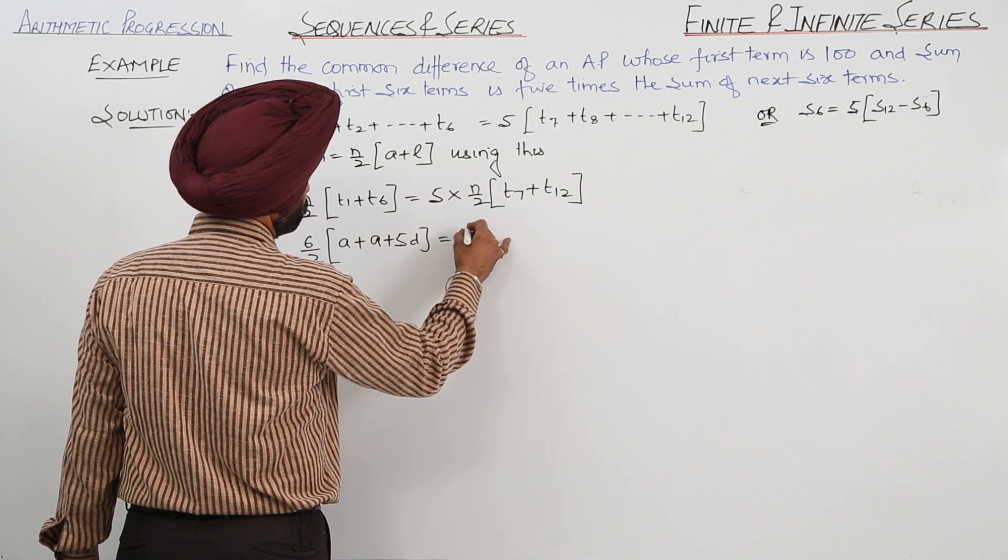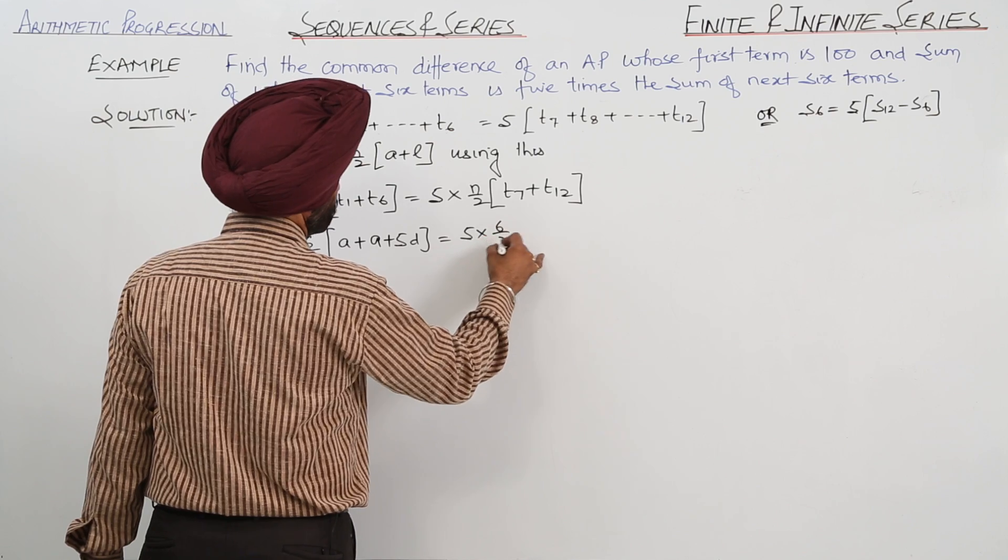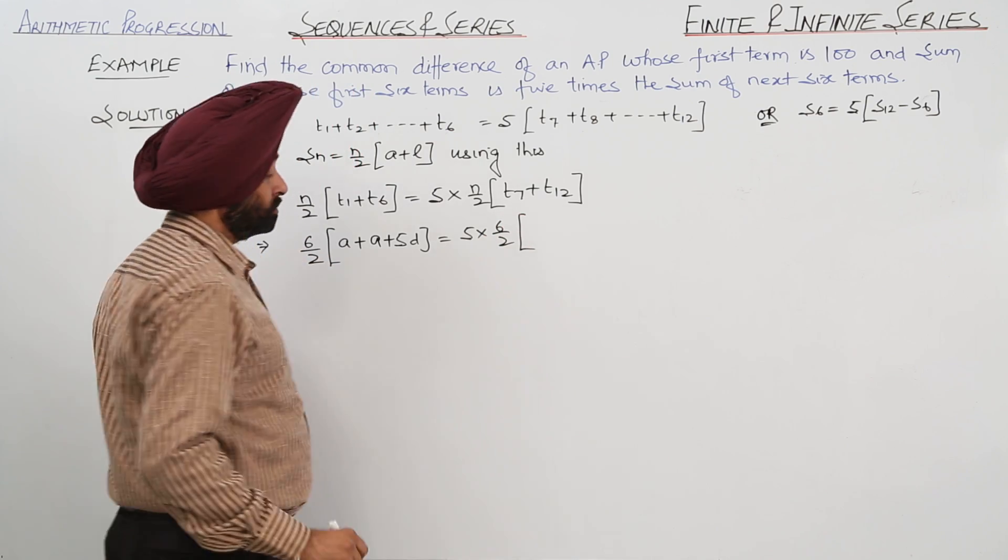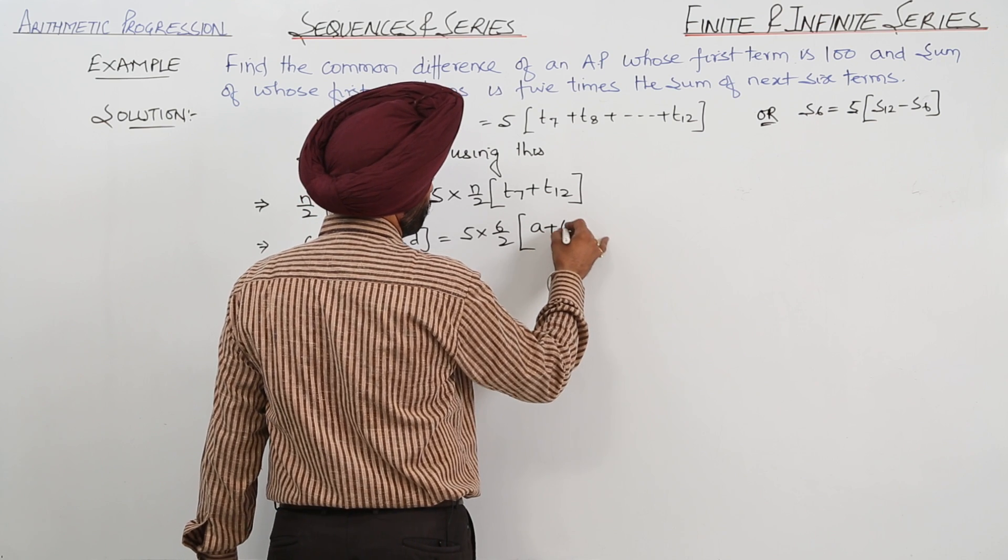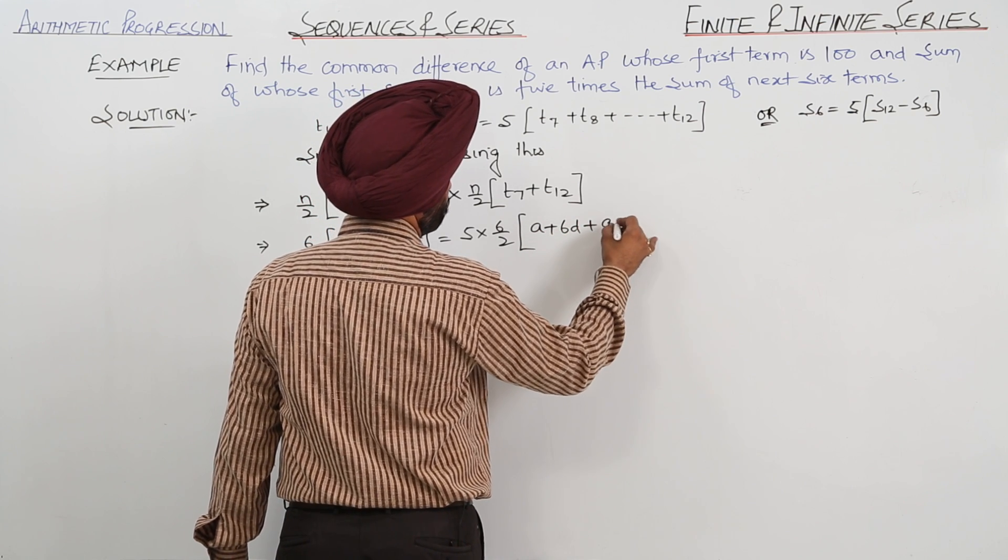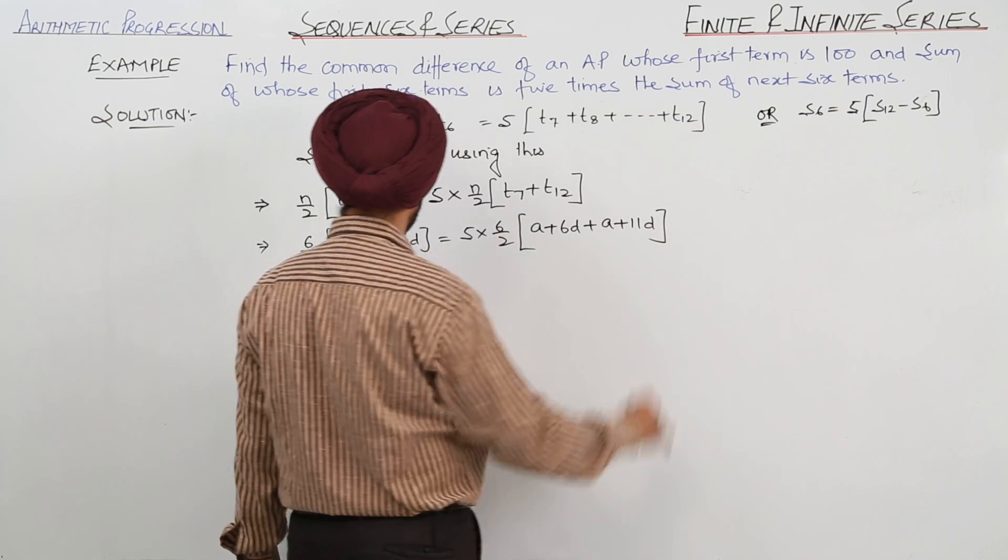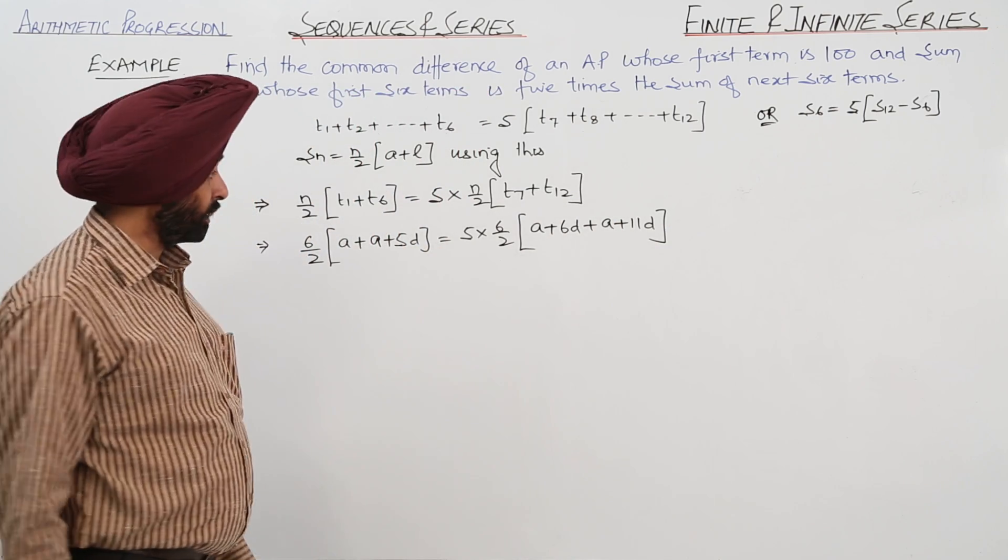Is equal to 5 times, again 6 terms, so 6 upon 2, A plus 6D plus A plus 11D.